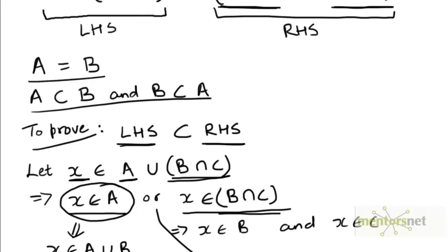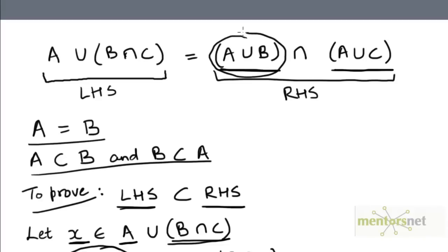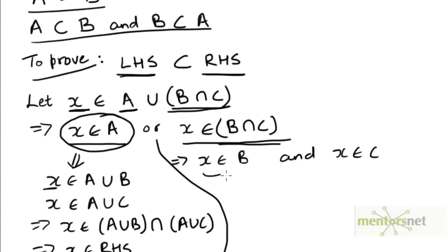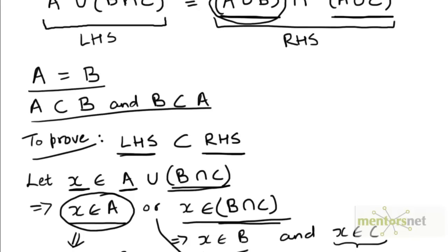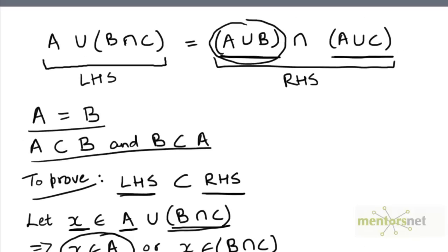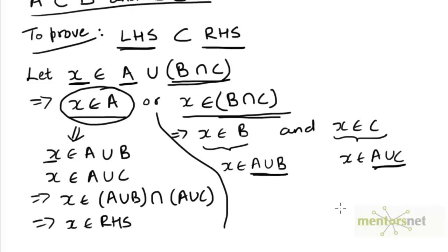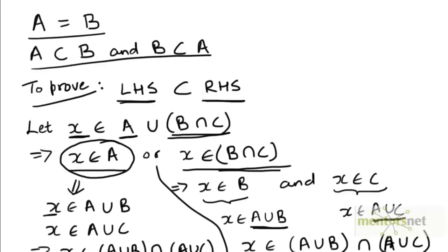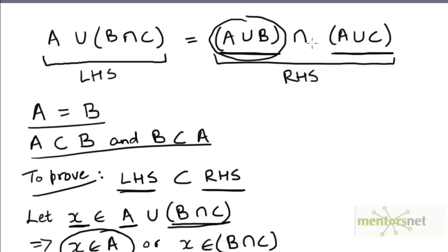Now if x belongs to B, it must also belong to A union B, because if it belongs to one of these sets it must belong to the union of that set with any other set. Similarly, if x belongs to C, it must belong to A union C as well. Now if x belongs to A union B and x also belongs to A union C, then x must belong to their intersection as well. So x must belong to (A union B) intersection (A union C), which is the set on the right hand side.